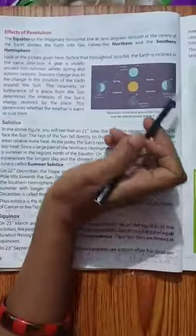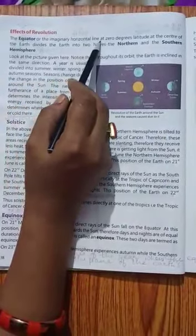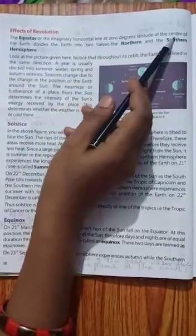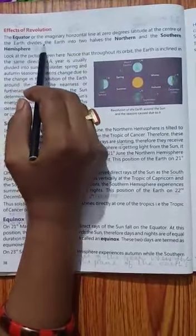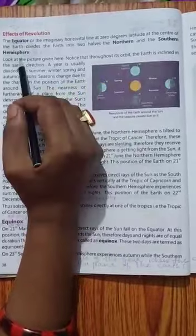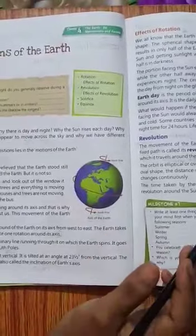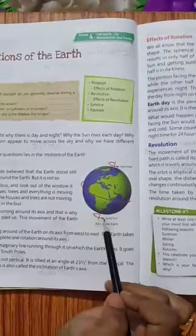Next, effects of revolution. Iska effect kya hota hai? The equator or the imaginary horizontal line at zero degree latitude at the center of the earth divides the earth into two halves, the northern and the southern hemisphere. Humne padha tha, earth jo hai two halves mein divided hai, northern and southern hemisphere.